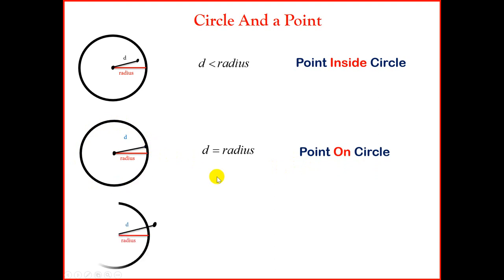We look at case 3. If the distance from the center to the random point is greater than the distance of the radius, then our conclusion is the point lies outside the circle. And we have our three diagrams showing you the three different cases.